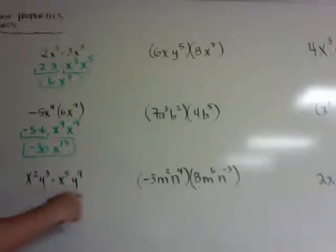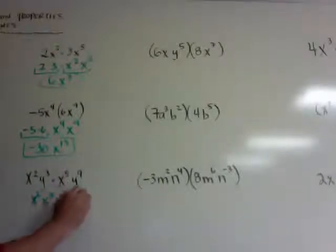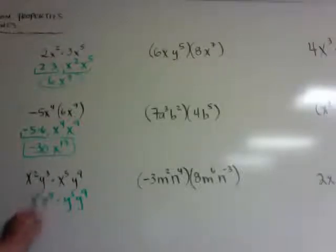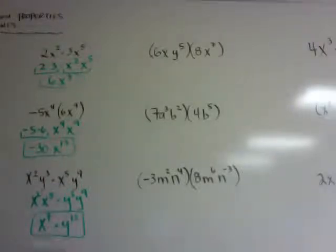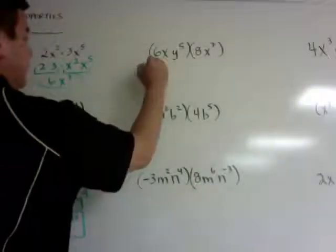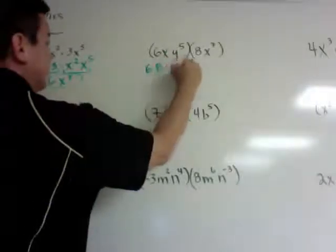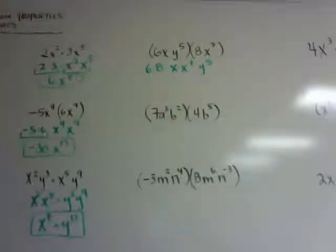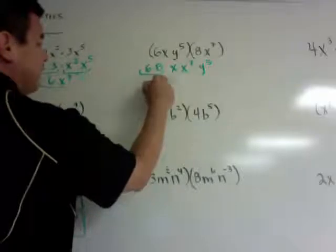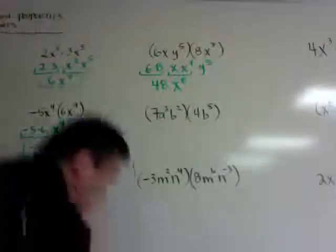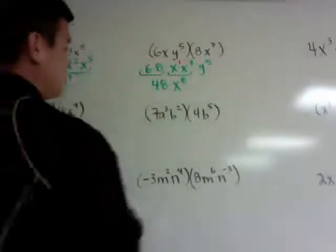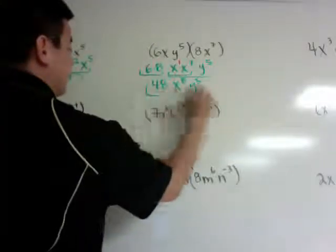If I have two different variables, I put the x's together and the y's together and do the same thing. So x² times x⁵ is x to the 7th, times y to the 12th. I also went alphabetical — x goes first, then y. Another example: 6x times 8x⁷y⁵ — remember the invisible exponent of 1 on the x — gives 48x to the 8th times y to the 5th.